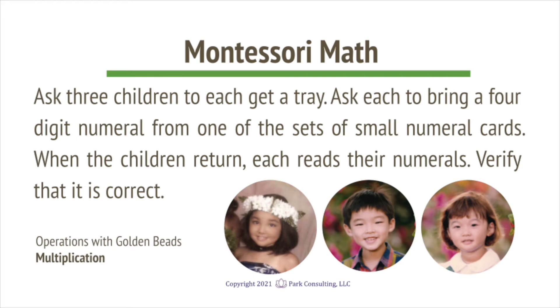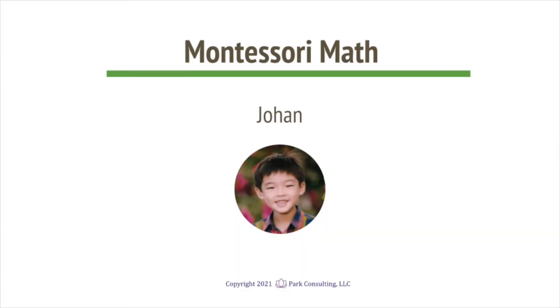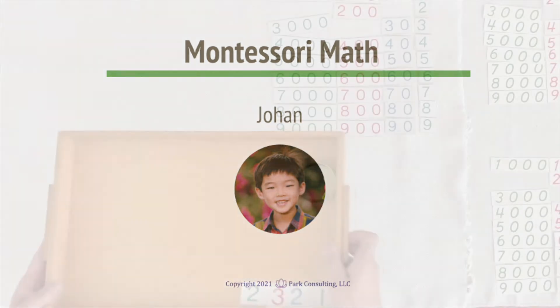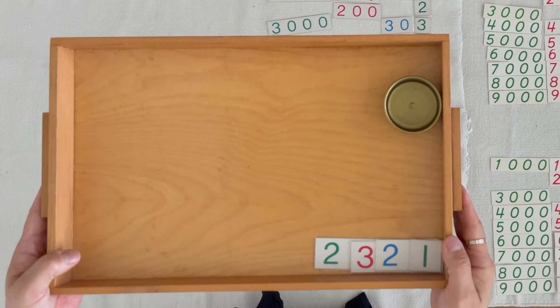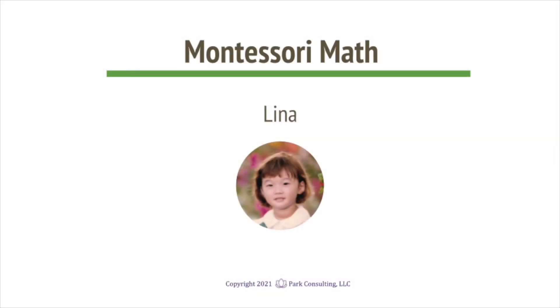This is called Operations with Golden Beads. Johan, you brought two thousands, three hundreds, two tens, one unit. Now can you get the quantities that match those numerals?